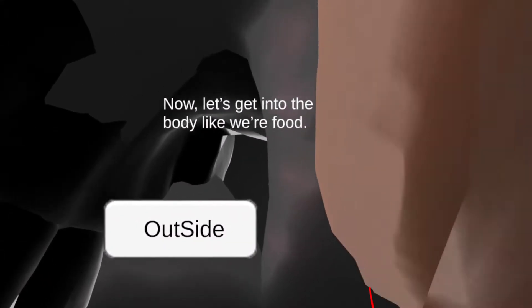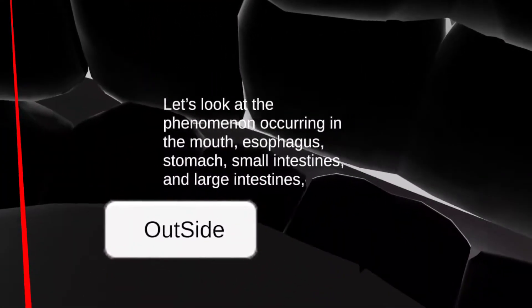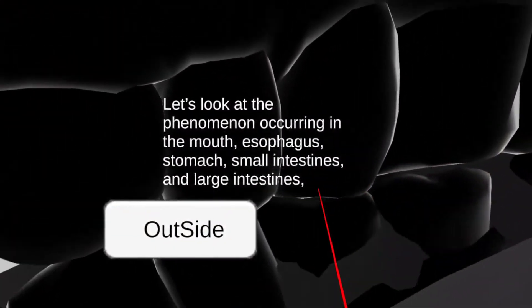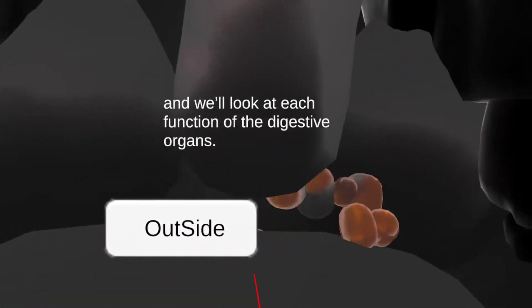Now, let's get into the body as if we were food. Let's look at the phenomenon occurring in the mouth, esophagus, stomach, small intestines, and large intestines. We are going to look at each function of the digestive organs.